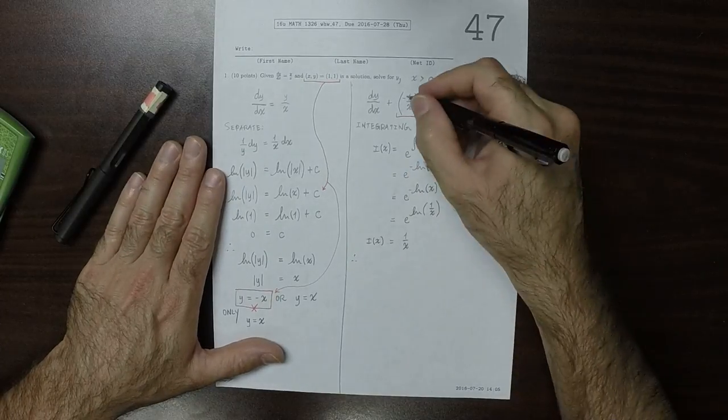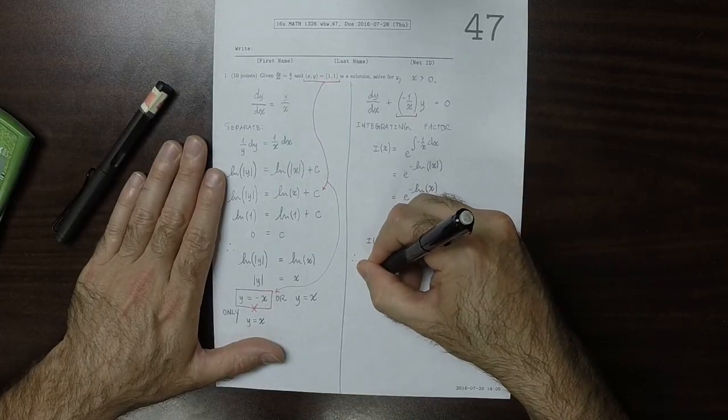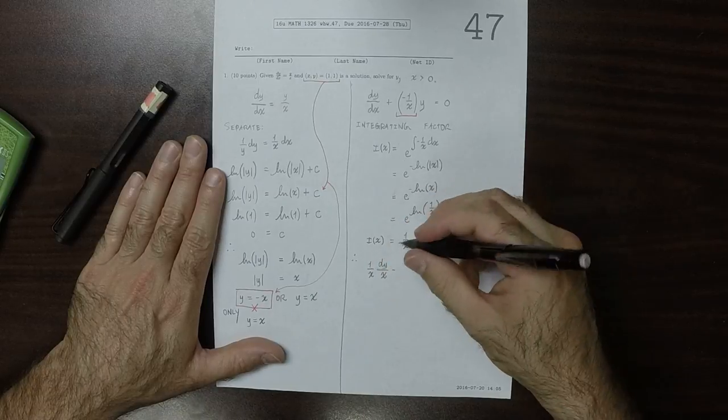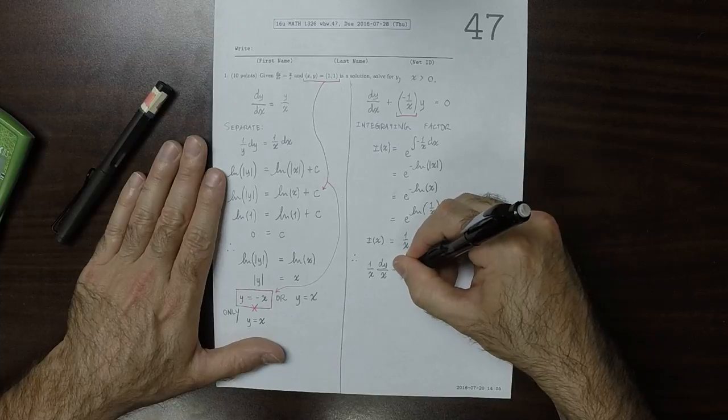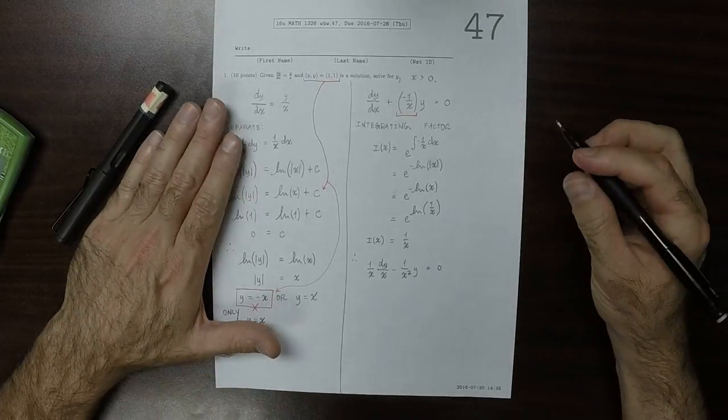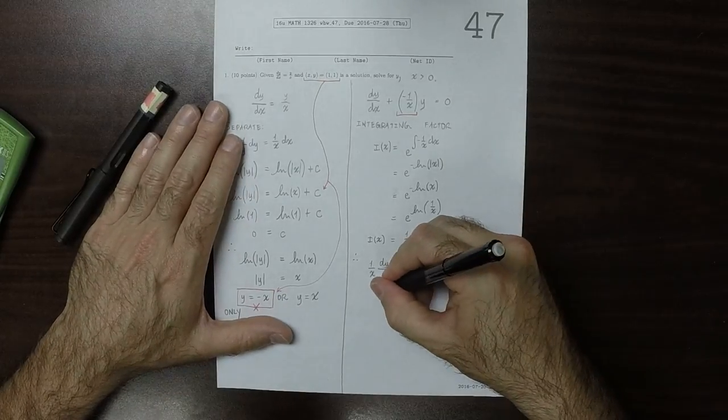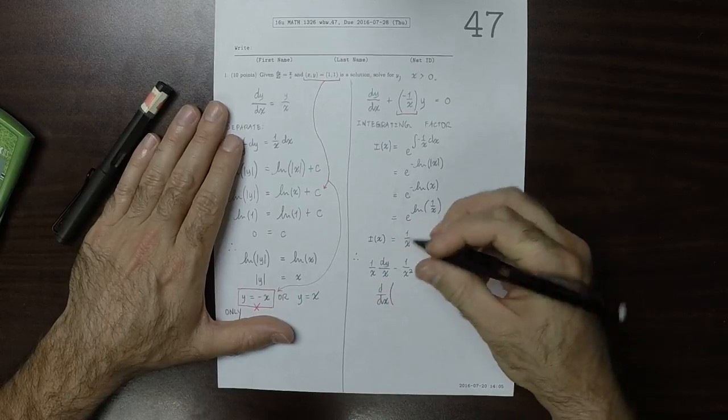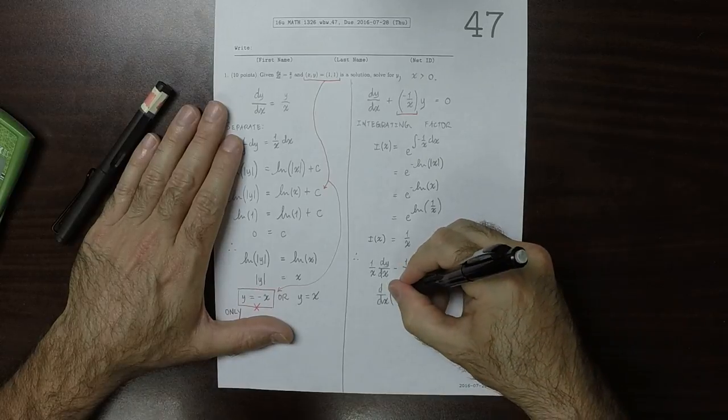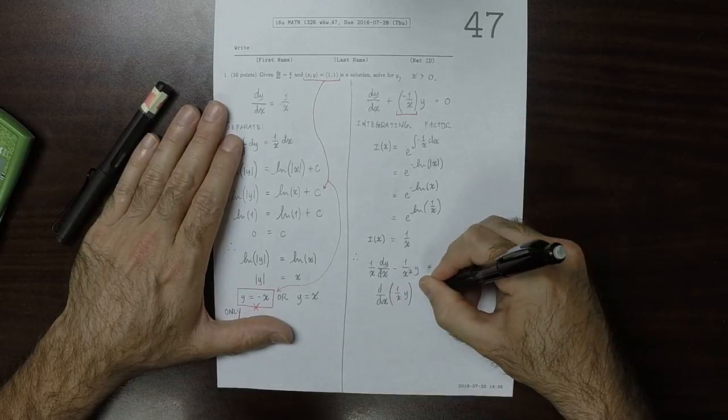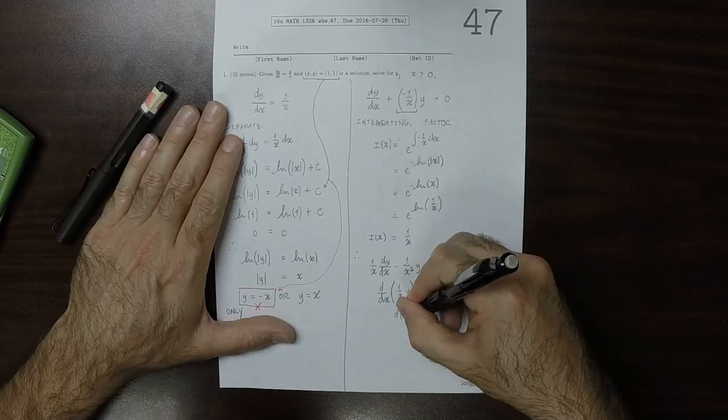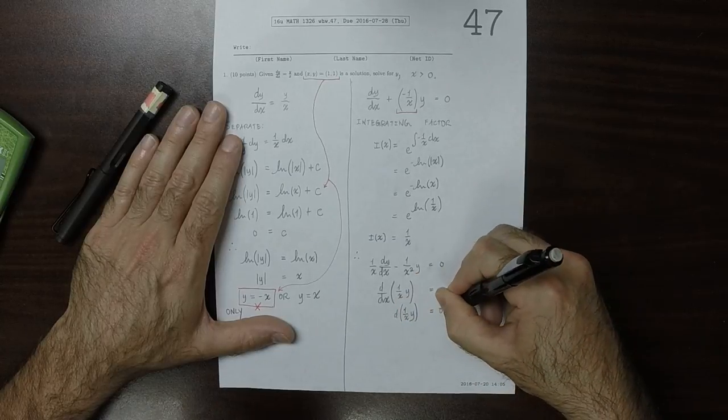Now we can take this integrating factor and multiply it by this. So that's 1 over x dy/dx minus 1 over x squared y is 0. So that's saying that d/dx of 1 over x y is 0. So d 1 over x y is 0 dx.